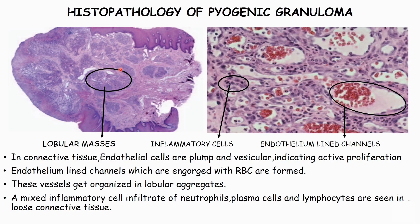These vessels get organized in lobular aggregates. A mixed inflammatory cell infiltrate of neutrophils, macrophages, and lymphocytes is evident in the loose connective tissue.